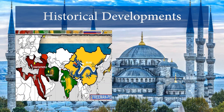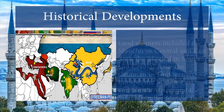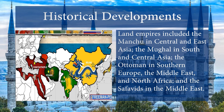Next, let's talk about which empires you need to know. Land empires included the Manchu in Central and East Asia, the Mughal in South and Central Asia, the Ottoman in Southern Europe, the Middle East and North Africa, and the Safavids in the Middle East — mainly Persia. Know what these land empires are called and know where they were. We can break this down by region.